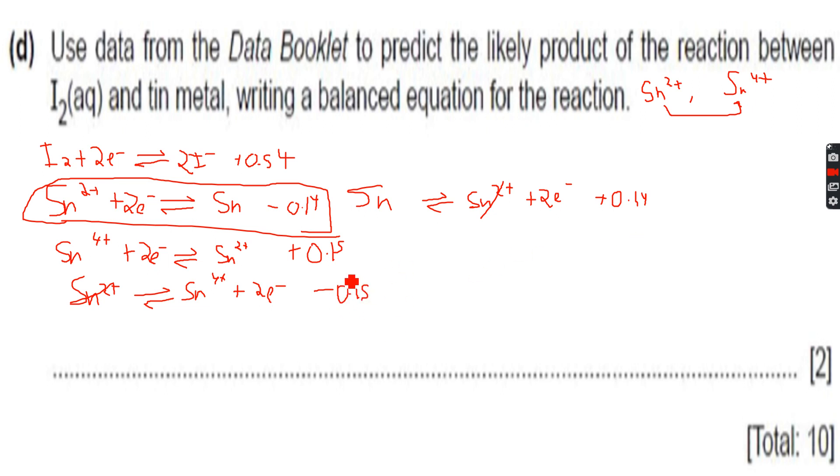What will happen is we'll add these two together. When we add these two, this becomes minus 0.01 volts, and this minus 0.01 volts we will add with the plus 0.54 volts, which becomes 0.53 volts. So this will become the E naught for this reaction, plus 0.53 volts, because we added all three together.